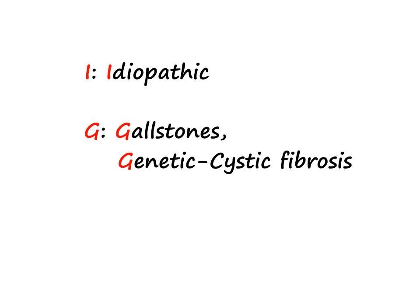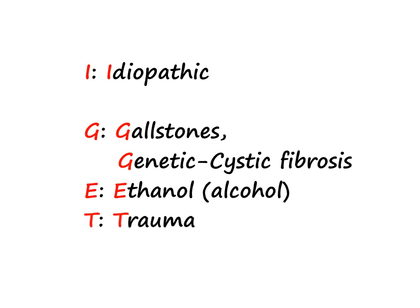G also stands for genetic, that is cystic fibrosis — remember, in patients with cystic fibrosis there will be pancreatitis. E stands for ethanol, which is alcohol. T stands for trauma — remember, in children the most common cause of acute pancreatitis is trauma. So the first part covers I-GET: idiopathic, gallstones, genetic, ethanol, and trauma, which are the most common causes.